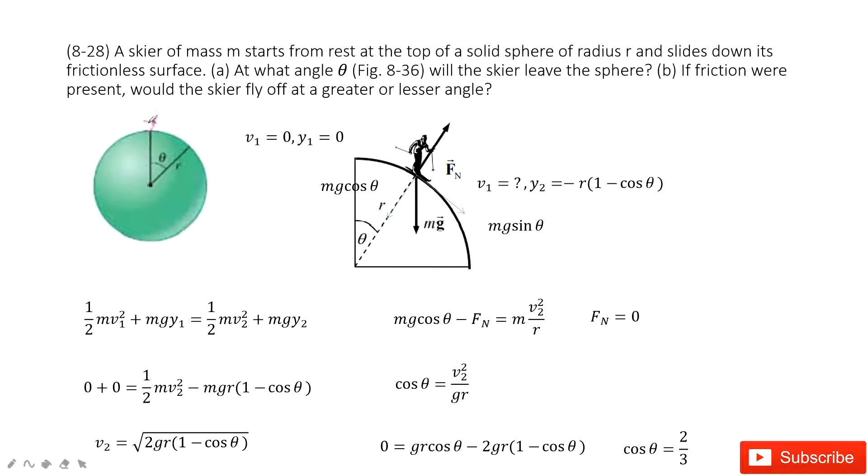In this problem, we can say there is a person. He moves from top of this circle to this position. And then ask you at what angle theta will this person leave this circle.